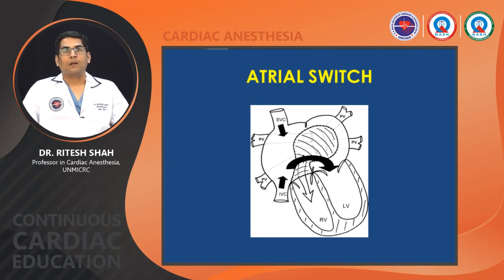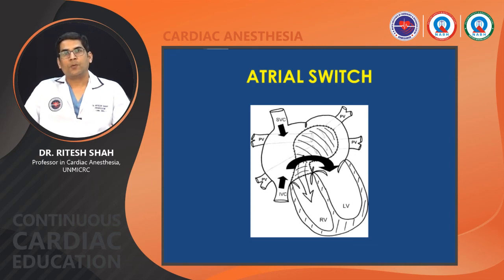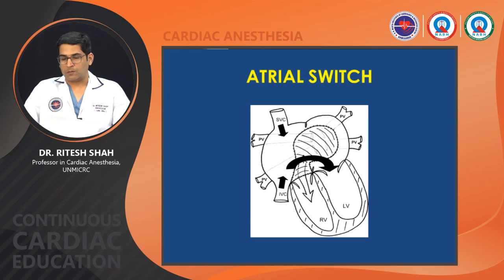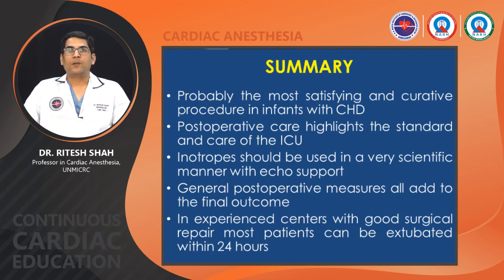In atrial switch, IVC and SVC flow are diverted to the LV, from which blood flows to the pulmonary artery, while flow from the pulmonary veins is diverted through a tunnel to the RV, which then acts as the systemic ventricle.